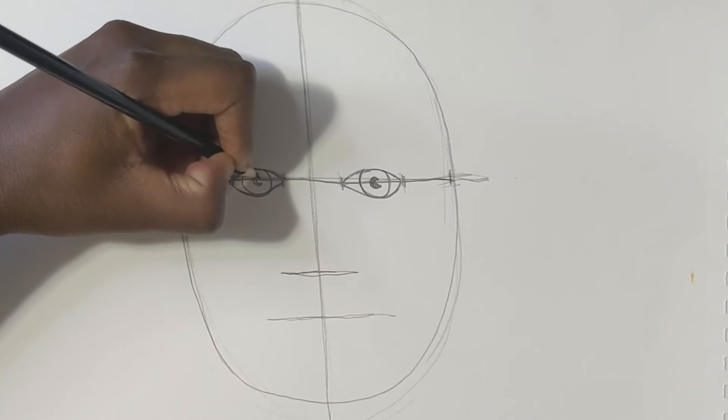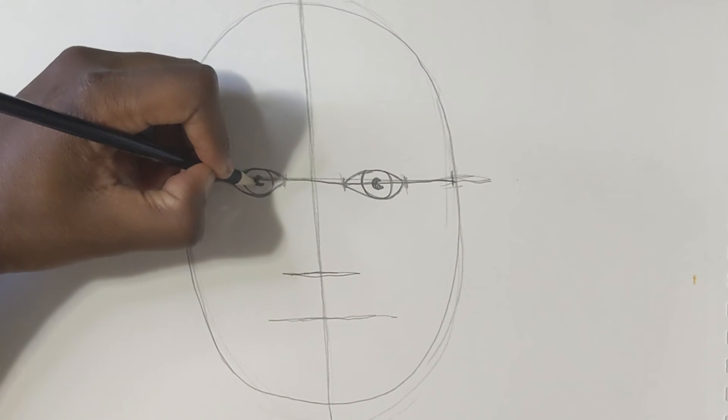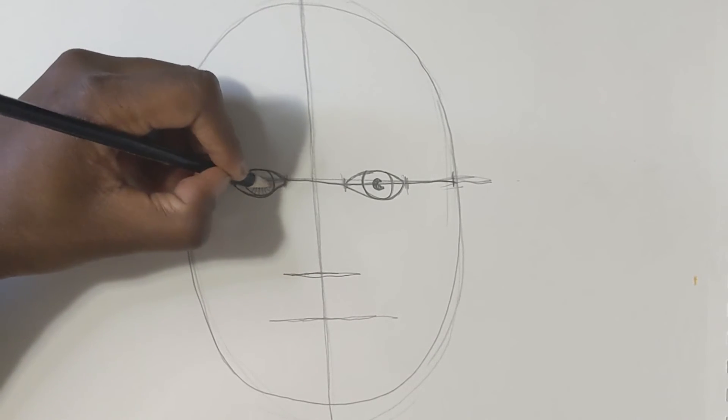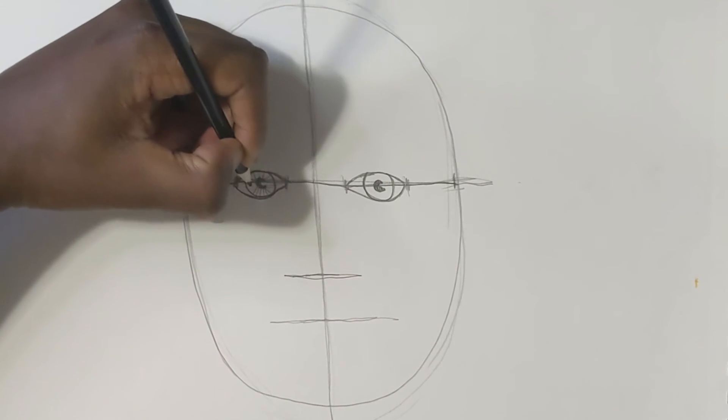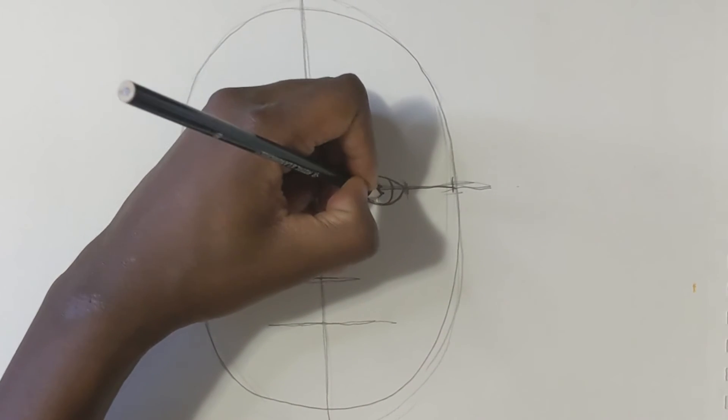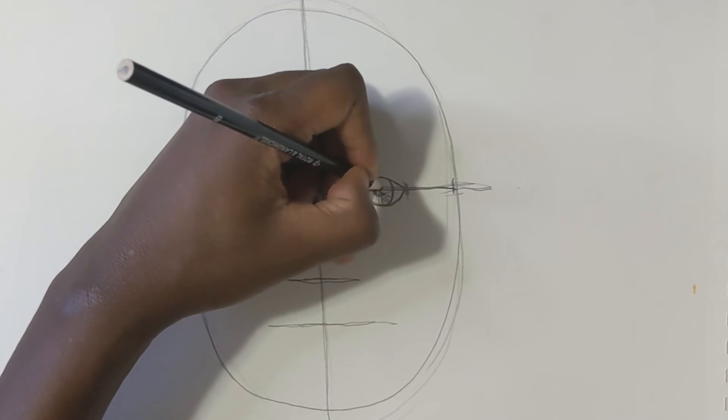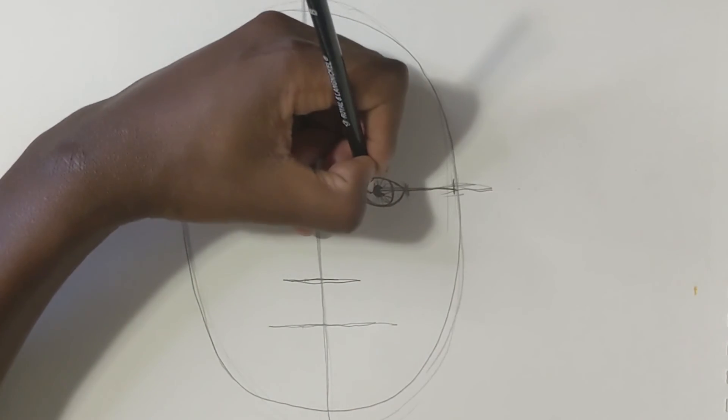After that with the eyes, we're going to make some lines to go out from the middle, leaving some space for the highlight. We're going to do that on both sides as well. For me, if I do both eyes at the same time, it helps me make the face more symmetrical. If I do one eye all the way to the end and then the other eye, it doesn't come out looking exactly the same.